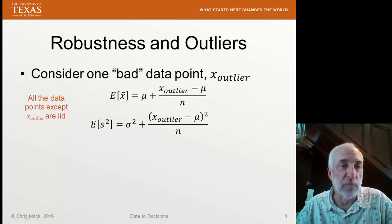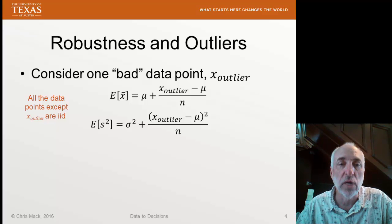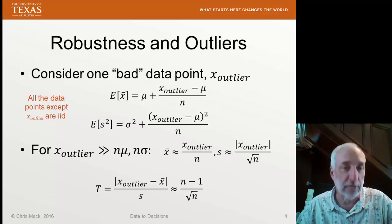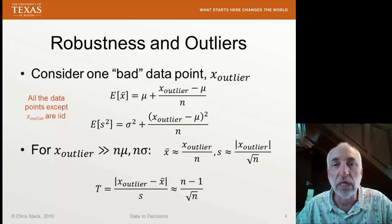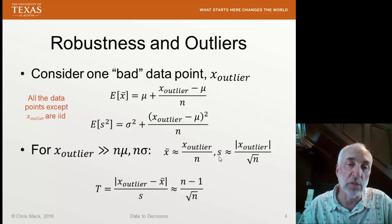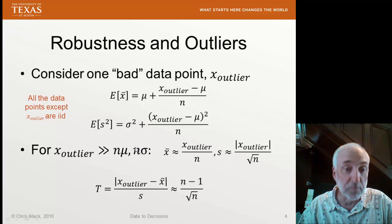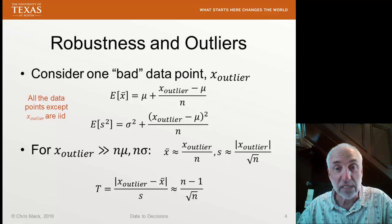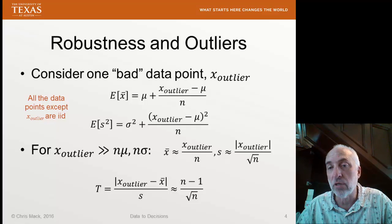We're assuming that all the data points except the outlier are independent and identically distributed with mean mu and variance sigma squared. Now, if this outlier is really big — bigger than the mean and bigger than the standard deviation multiplied by the square root of n — then we see that the mean and the standard deviation of our sample become dominated by this one outlier.